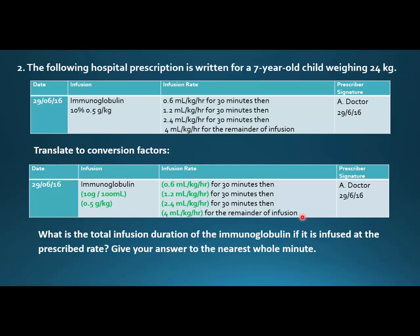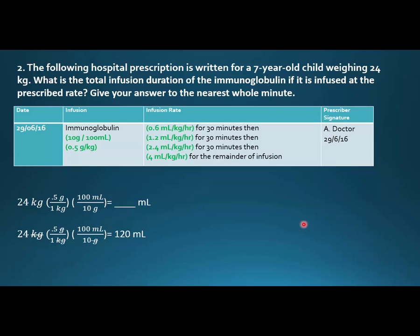The first thing to do is say: I know eventually I'm going to need to know how many mls I'm infusing in total, and I don't have that set up right now, so let's look at that. I have a 24-kilogram seven-year-old child, and 0.5 grams per one kilogram, 100mls per 10 grams. I prefer to go right to left, so if I see mls I need a conversion factor that has mls — this one does — so I put 100mls over 10 grams.